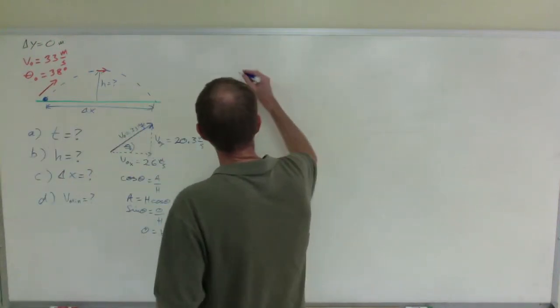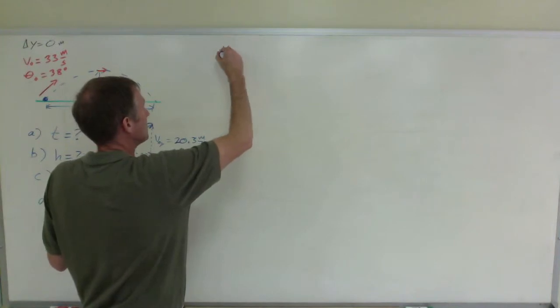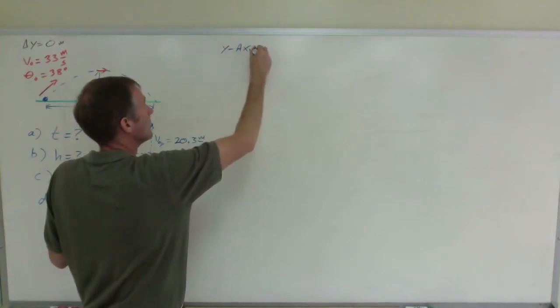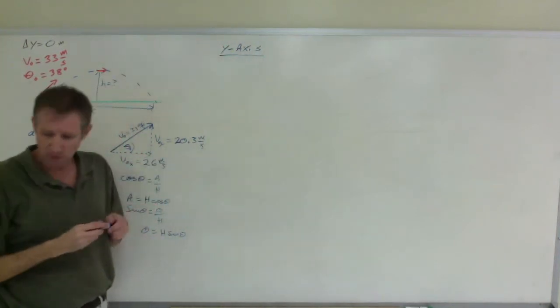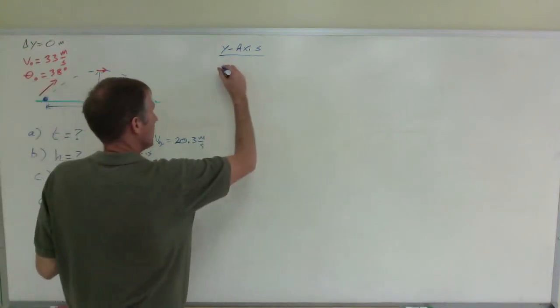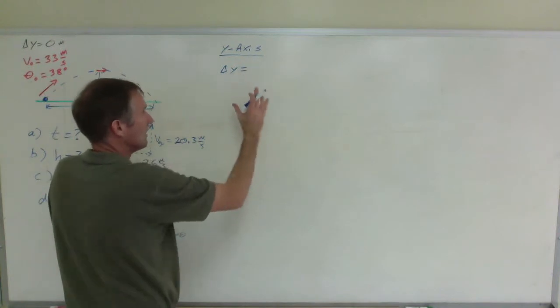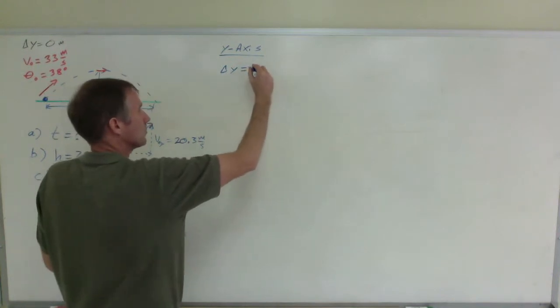So let's find the total time in the air. The total time in the air, that is going to be in the y-axis. There is a variety of ways to do this. For this entire journey, the trip delta y is equal to zero. I am going to solve this this way. There are different ways to do this, because we have done different ways in class.